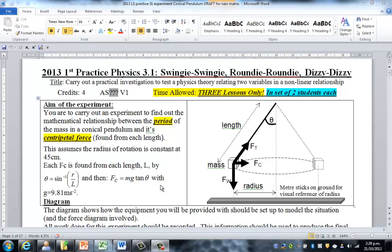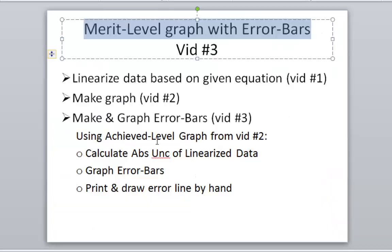Okay, this is the third video to make a merit level graph for this experiment. This continues from the achieved level graph, and what we need is to make error bars.